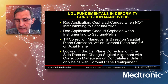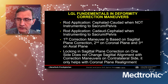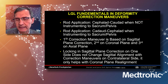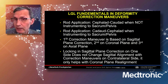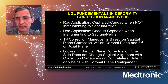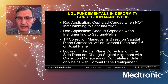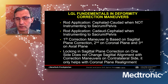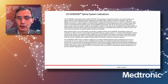Locking sagittal plane correction on one side does not change sagittal alignment when performing correction maneuvers on the contralateral side — it only helps with coronal plane realignment. This is highlighted at the caudal end of constructs going to the sacrum and ilium: compressing the lumbosacral junction on the right locks in lordosis, so distracting the contralateral side does not remove that lordosis. Always address the sagittal plane first, then the coronal plane second, when performing any instrumentation correction maneuvers for spinal deformity. Thank you for your attention.